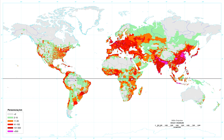Earth's total area is 510,000,000 square kilometers (197,000,000 sq mi). Therefore, the worldwide human population density is around 7,500,000,000 divided by 510,000,000, which equals 14.7 per square kilometer (38 per square mile). If only the Earth's land area of 150,000,000 square kilometers (58,000,000 sq mi) is taken into account, then human population density is 50 per square kilometer (129 per square mile).